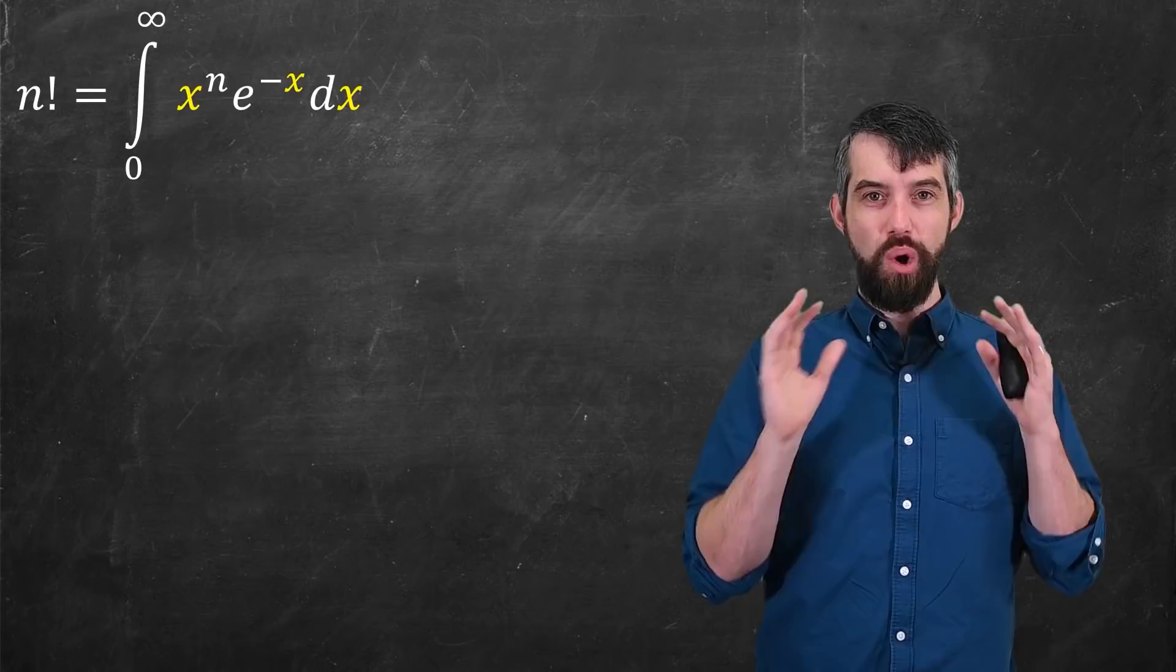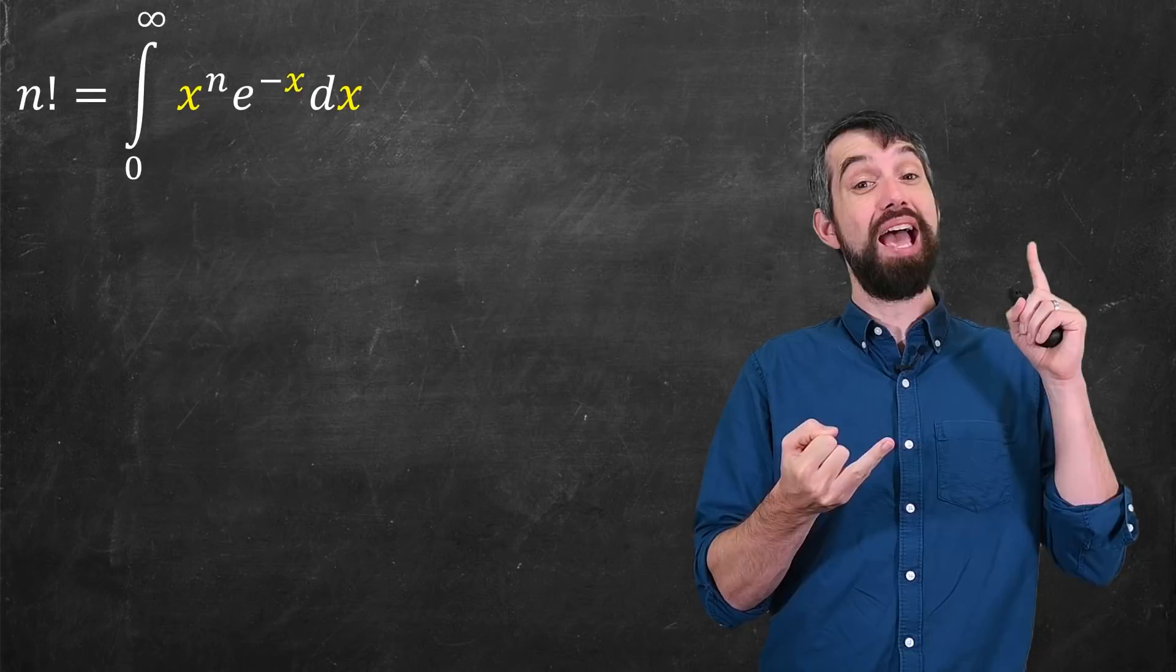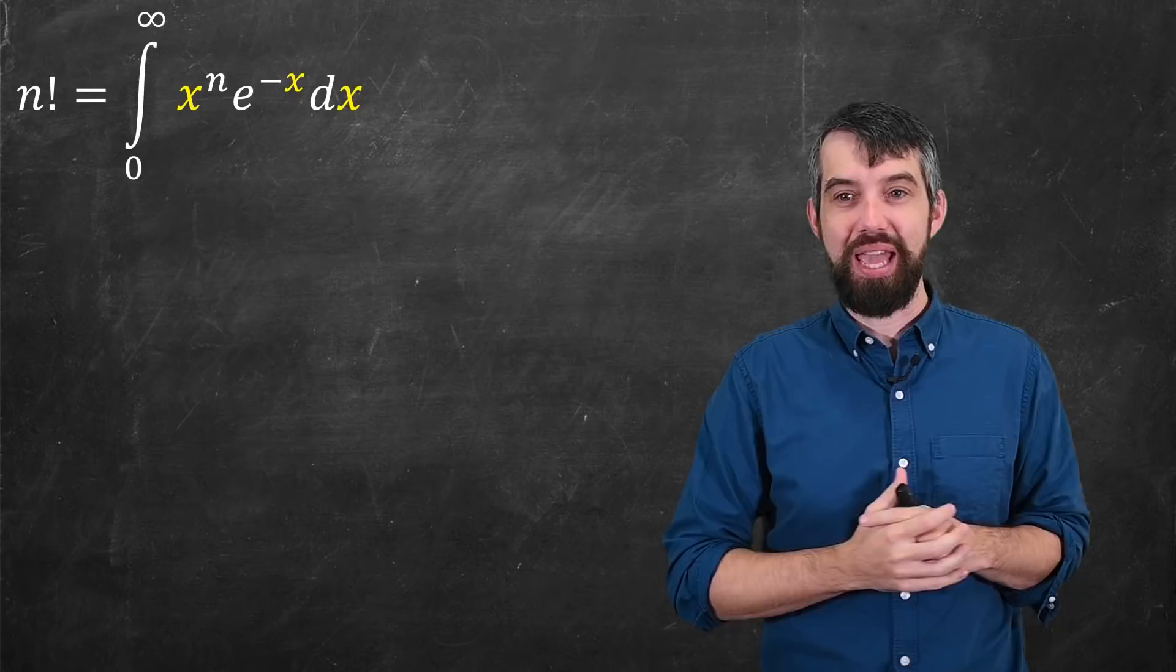Okay, so those are my three ingredients: the gamma function, the Taylor series, and the Gaussian integral. Now it's time to actually get to Sterling's formula. So, where are we?